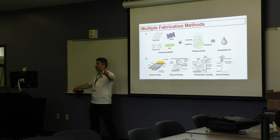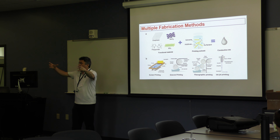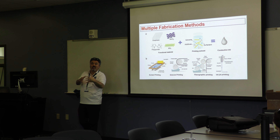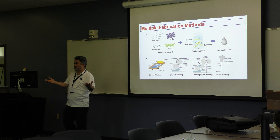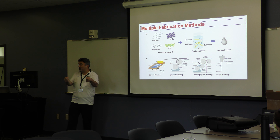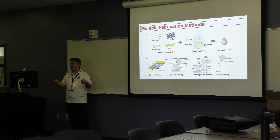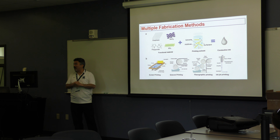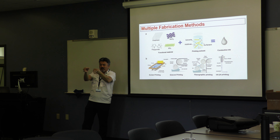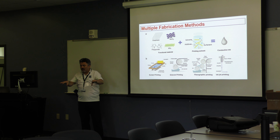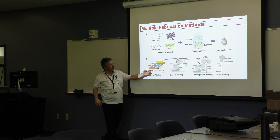In screen printing, you have a screen with high-resolution small holes — originally a silk material, hence the name silk screen printing, but today a metal mesh. You can easily do 100 micron features. The limit of screen printing is about 50 microns. The problem is that the mechanical pushing can prevent good-quality film formation at finer scales.